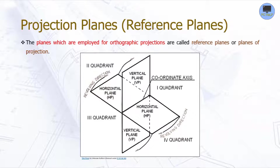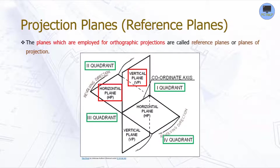The main two planes are the vertical plane, usually denoted as VP, and the horizontal plane, usually denoted as HP, which intersect each other perpendicularly to form four quadrants. The four quadrants are named according to the anti-clockwise direction, starting from the first quadrant.